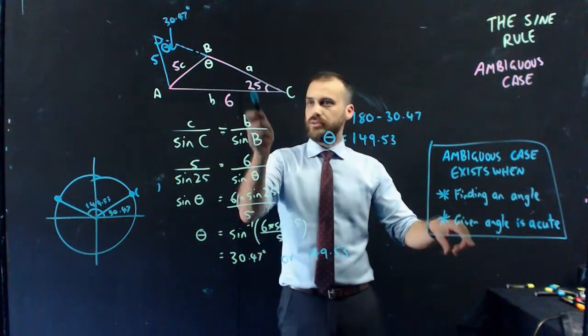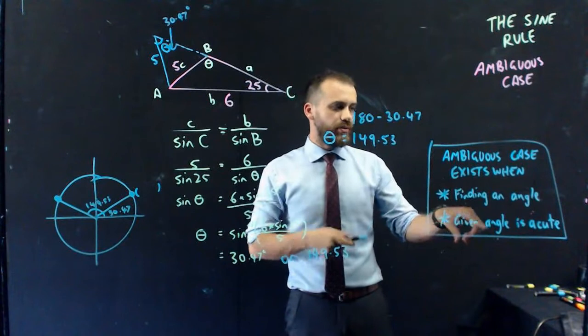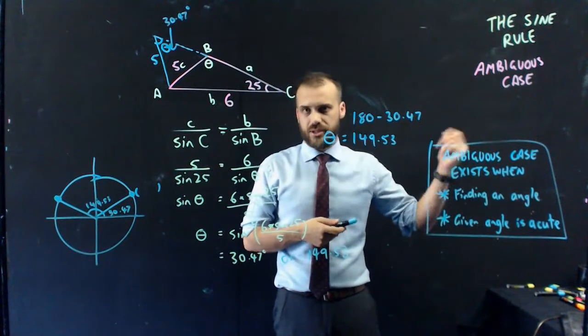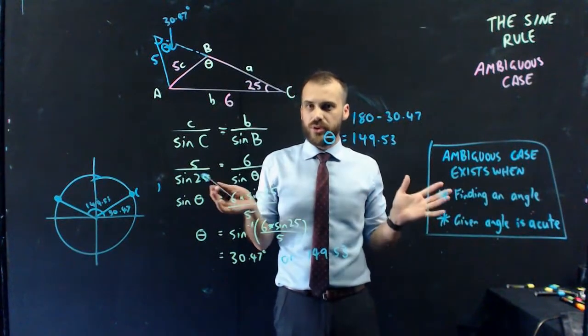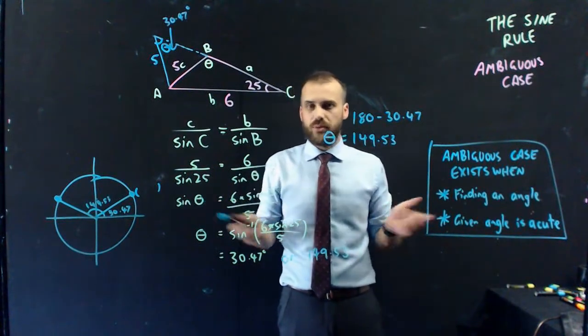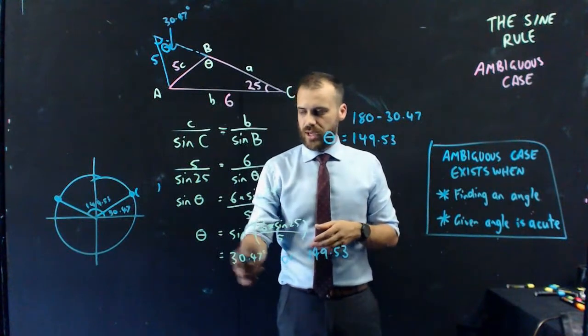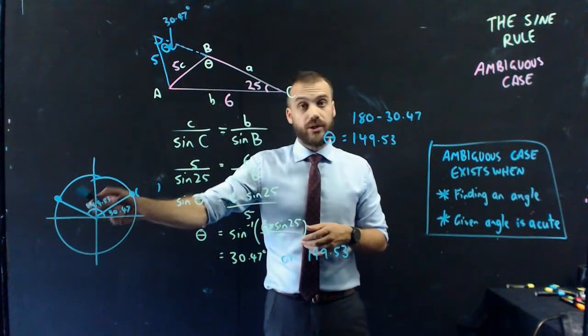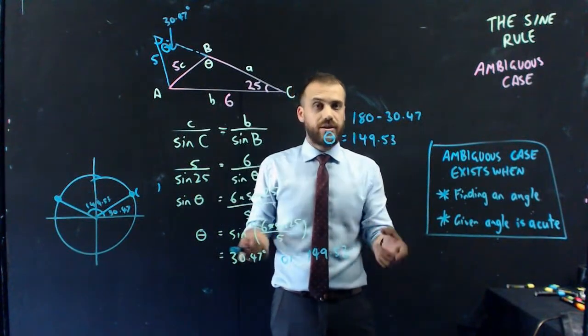And when the given angle, 25, when the given angle is acute, less than 90 degrees. If it's more than 90 degrees, then we're not going to have an ambiguous case. It's pretty easy to see why, because our ambiguous case always puts something in quadrant one and quadrant two, as in an angle greater than 90 degrees.